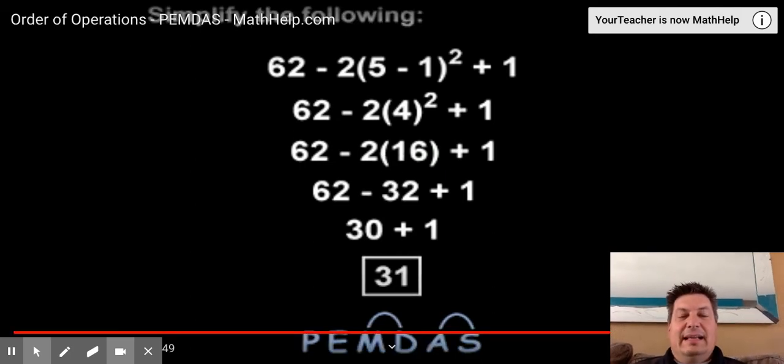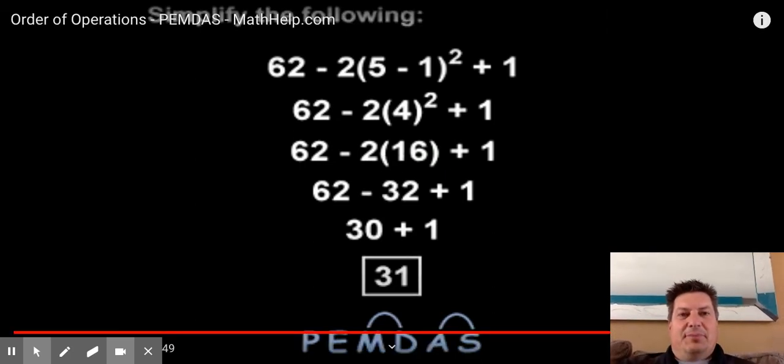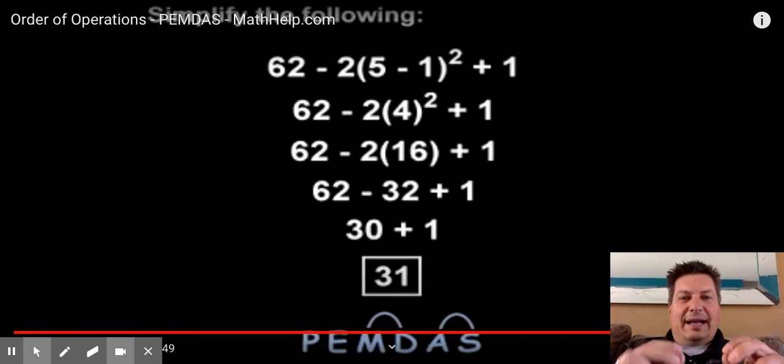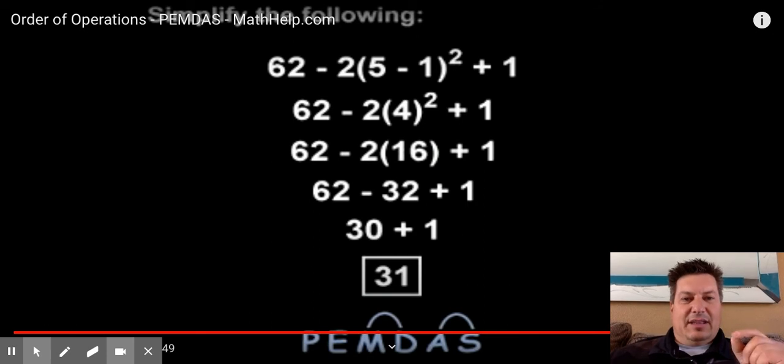Now it's your turn, and the bit of advice I have for you is rewrite the problem after you solve a portion. At the top of this page, 62 minus 2, and then parentheses, in parentheses, 5 minus 1, it's so important to rewrite that problem on the next step. Because when you rewrite it, then you're able to think in sequence, what's the next thing that I do?